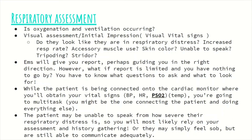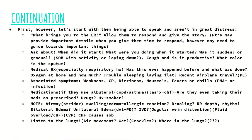If the patient isn't in severe respiratory distress and is able to speak, we're going to gather most of our information from them. Simply asking 'What brings you to the ER today?' or 'How can we help?' will have most patients provide you with all the information you need. You can begin by asking orientation questions — what is your name, what year is it, where are you, what brought you here — which essentially tell you the patient has adequate gas exchange and perfusion to the brain.